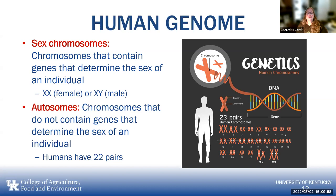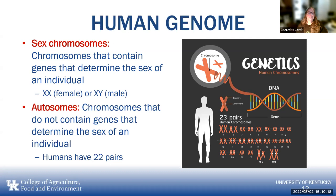Autosomal chromosomes are those that do not determine the sex of the individual. Humans have 22 pairs of these, for a total of 23 pairs of chromosomes. One pair determines whether you're male or female, and the others determine other characteristics such as blue eyes or blonde hair in your genetic profile.